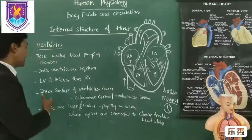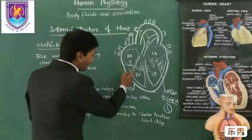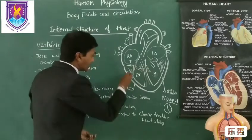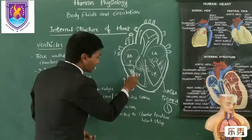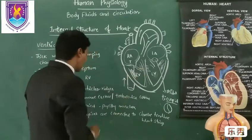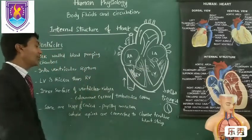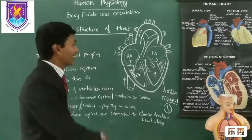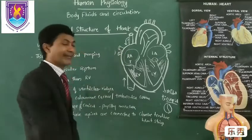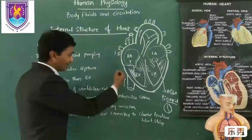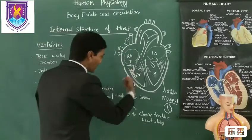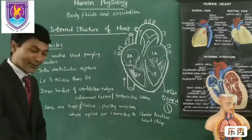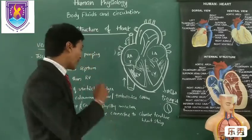When we look at the inner surface of each ventricle, it has several ridges or elevations or column-like structures. These ridges are called columnae carneae or trabeculae carneae. Note that we cannot find any such ridges in the atria — this feature is unique to the ventricles.